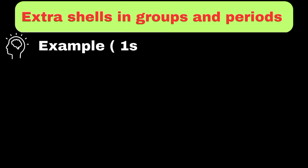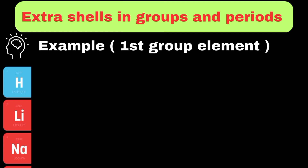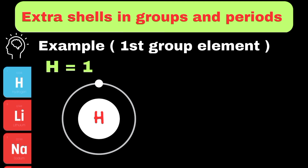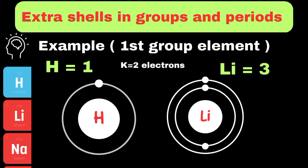We should understand why extra shells are added in groups but are not added in periods. To understand this, let's take the example of first group elements such as hydrogen, lithium, and sodium. The atomic number of hydrogen is 1, and its valence electron is present in the first shell, which we call the K-shell. If we move downward in the group and consider lithium, its atomic number is 3. We must remember that the K-shell can have a maximum of 2 electrons, so we have to move to the second shell. Here we can see that as we move from hydrogen to lithium, an extra shell is being added, which shows that the electronic cloud is expanded.